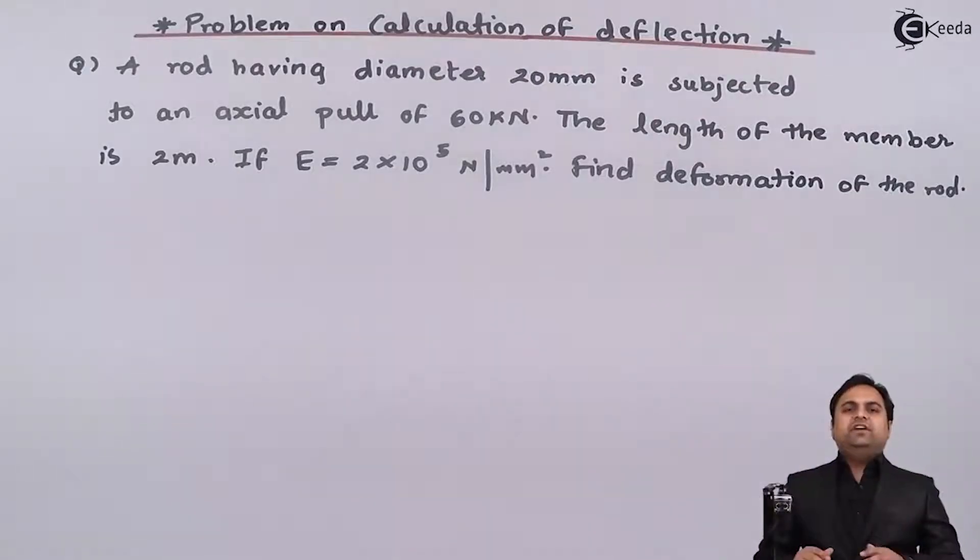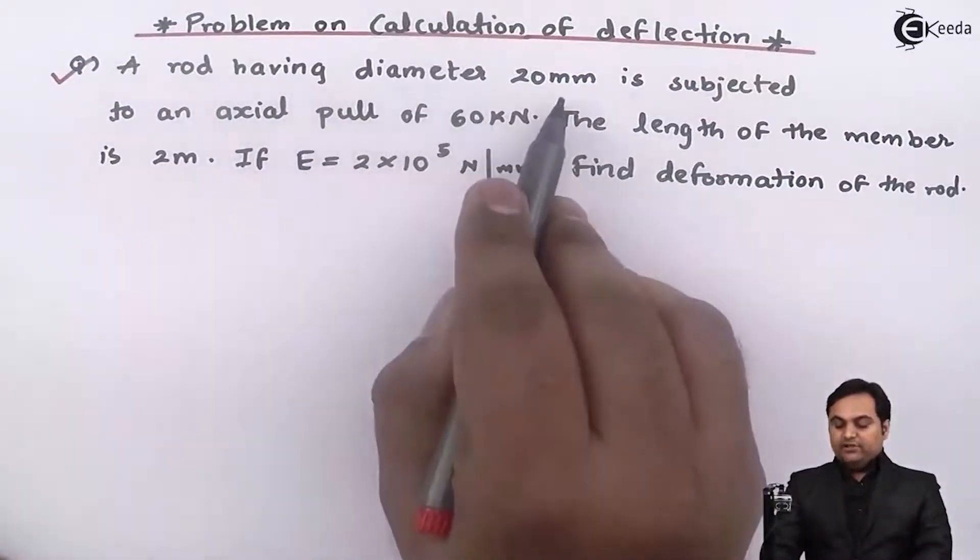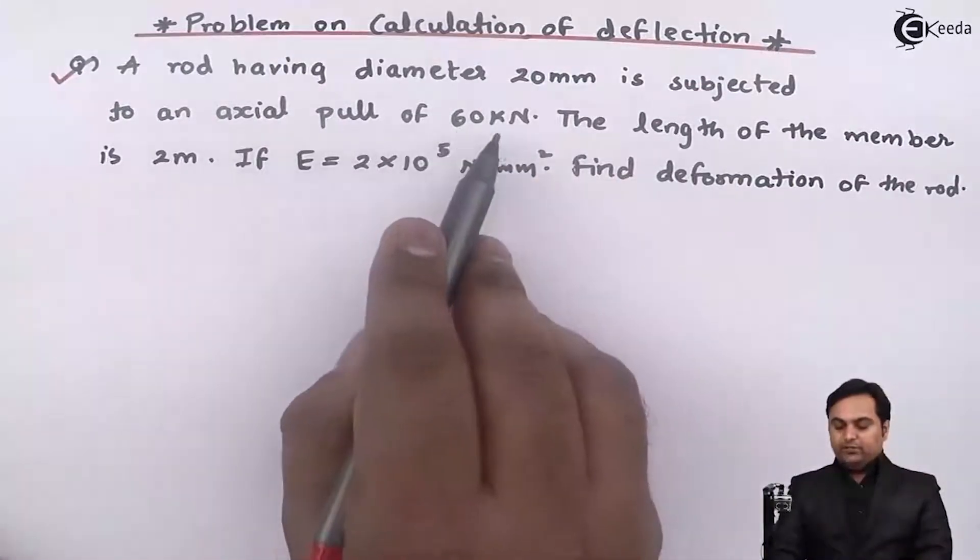Here in this video we will see a problem in which we are going to calculate the deflection for a given member. A rod having diameter 20 mm is subjected to an axial pull of 60 kilonewton.